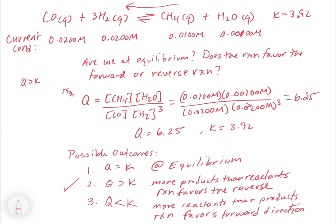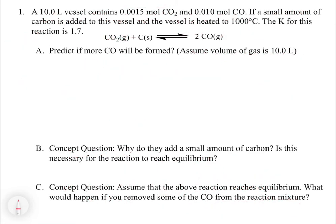Let's look at another example. A 10-liter vessel contains 0.0015 moles of CO₂ and 0.010 moles of CO. A small amount of carbon is added and the vessel is heated to 1000°C. The question is: will more CO be formed? K for this reaction is 1.7. We'll set up a reaction quotient using the CO and CO₂ information and compare Q to K to determine the direction.